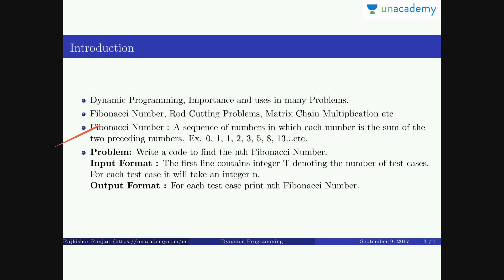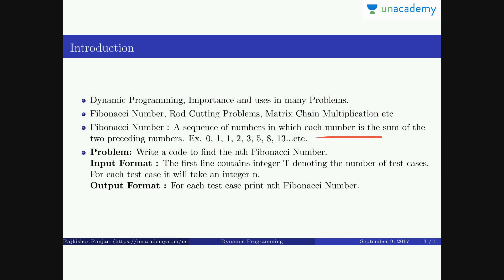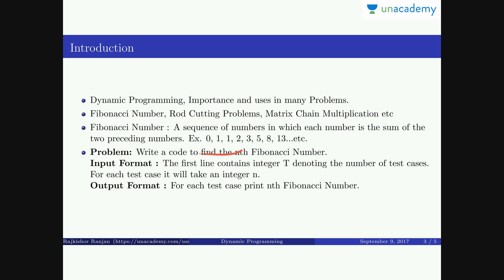We will discuss about Fibonacci numbers, and on the basis of finding the nth Fibonacci number we will see the concept of dynamic programming. A Fibonacci number is a sequence of numbers in which each number is the sum of the two preceding numbers. If we say the 0th number is 0 and the first number is 1, then the next numbers are 1, 2, 3, 5, 8, 13, etc.